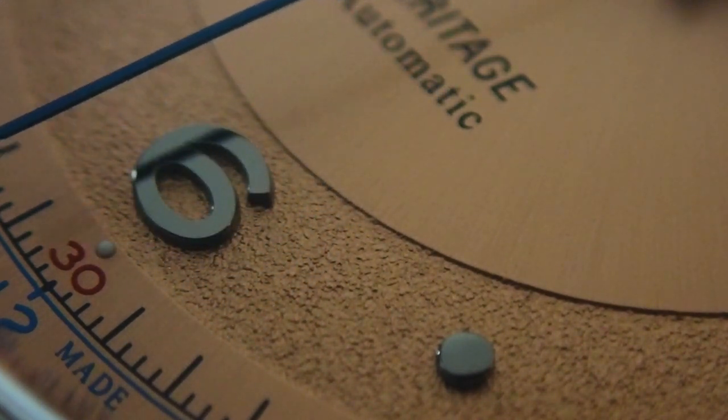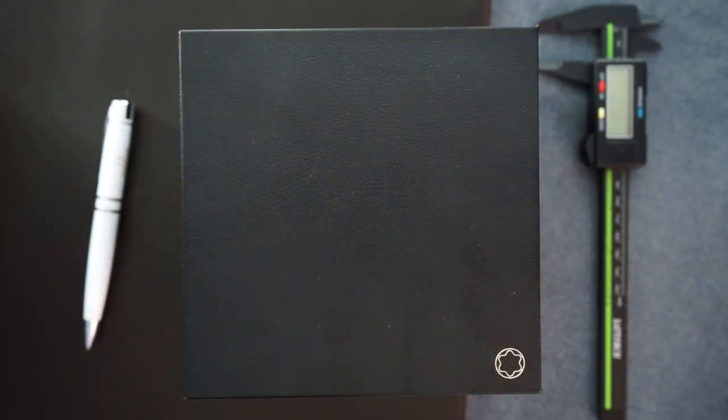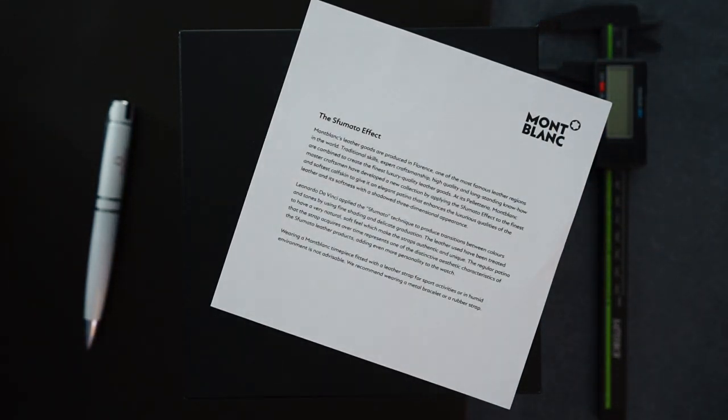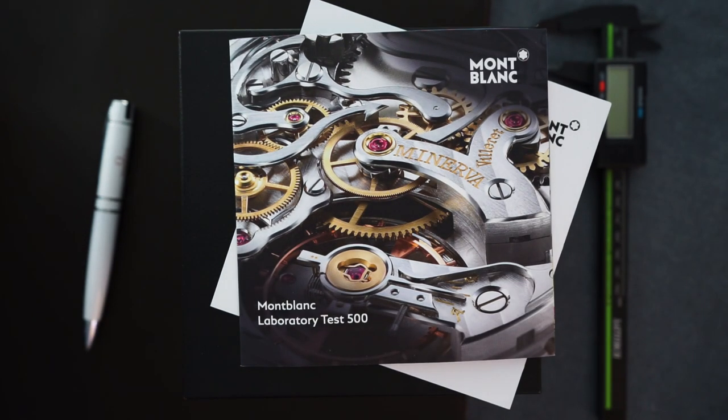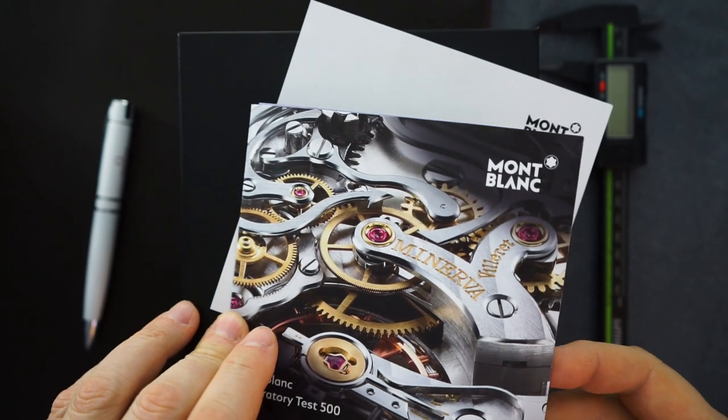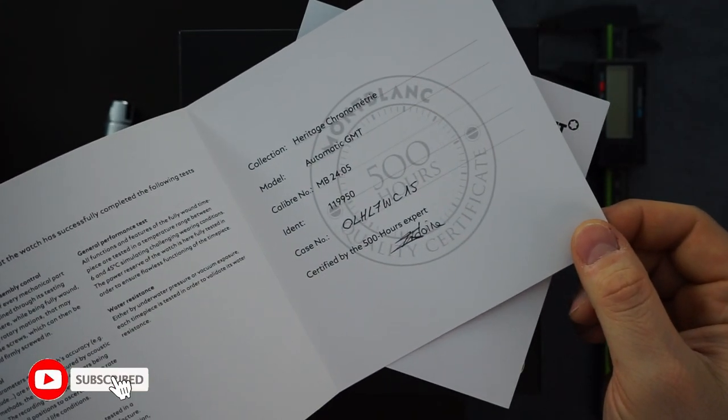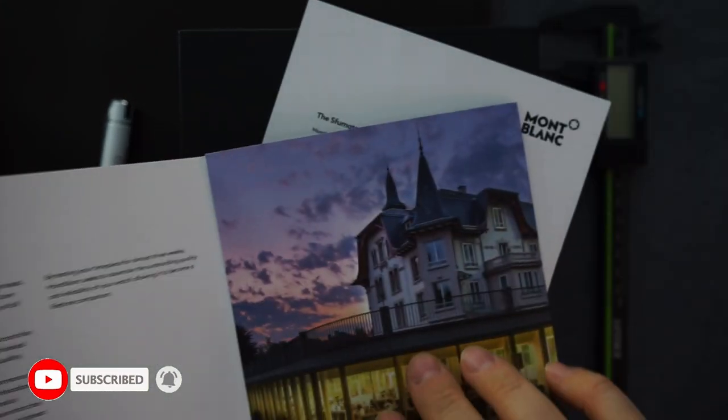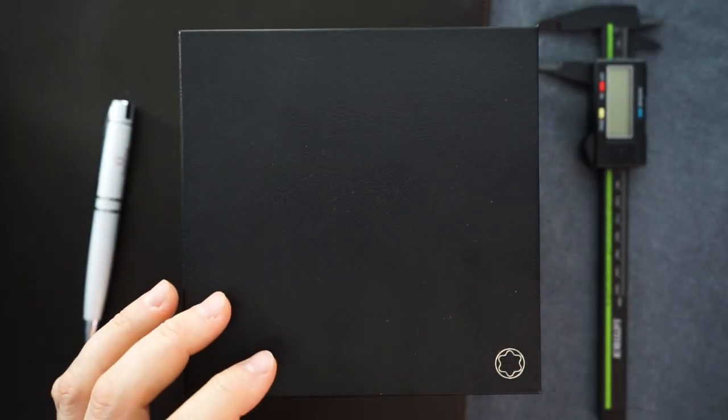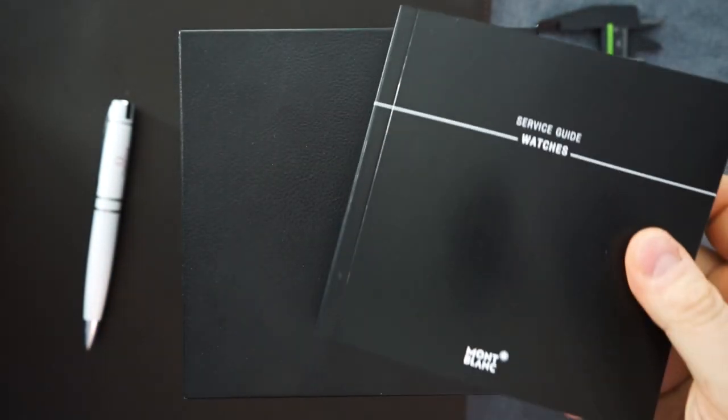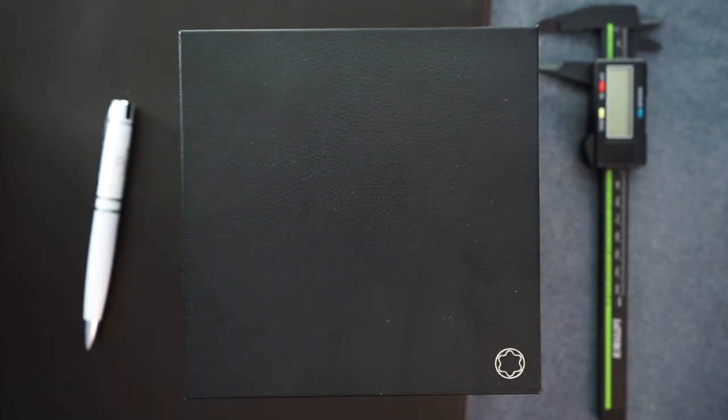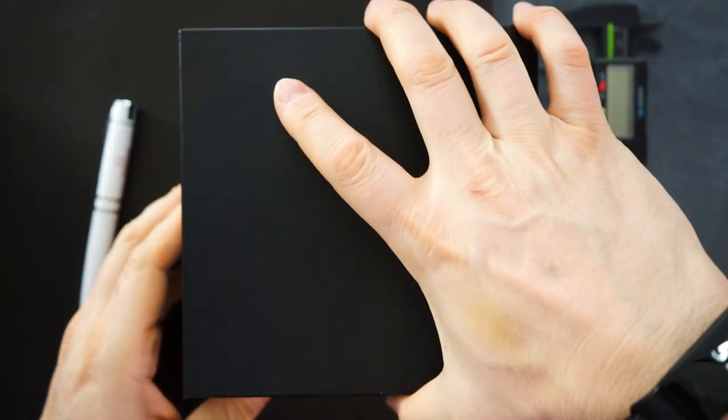It comes in the exact same packaging, an outer cardboard box and an inner leather box signed Montblanc. They give you information on the strap and the movement. They do a Montblanc laboratory test 500, tested for 500 hours by one person who actually signs the certificate. It comes with this giant booklet which all Montblanc watches come with, very heavy with a lot of information in it.